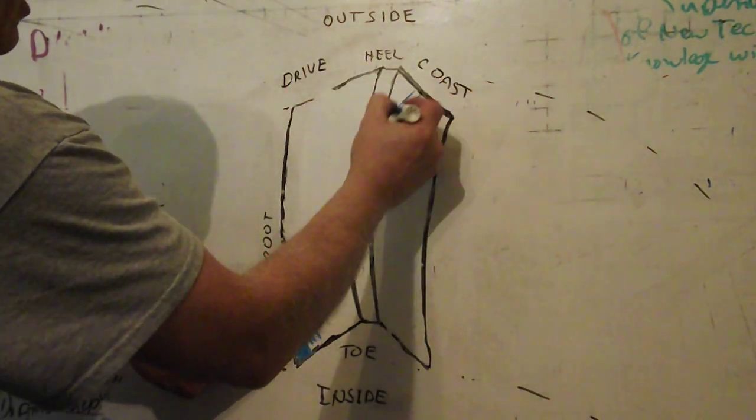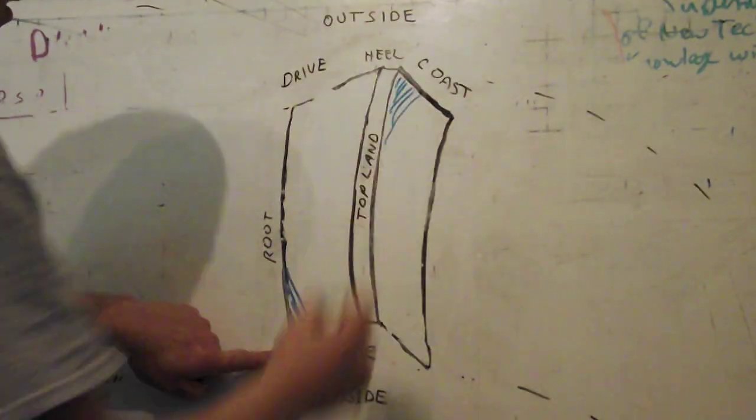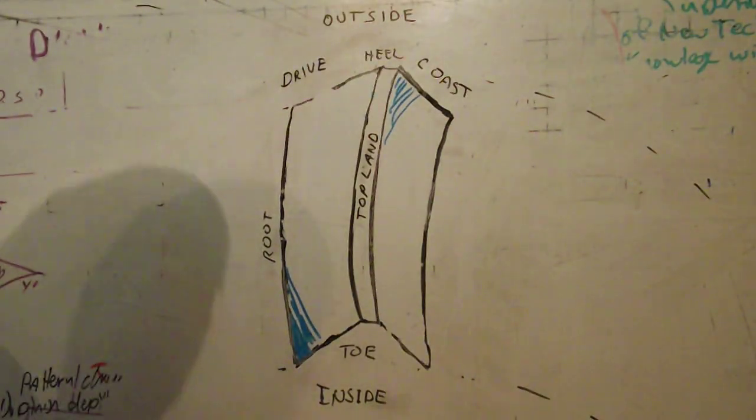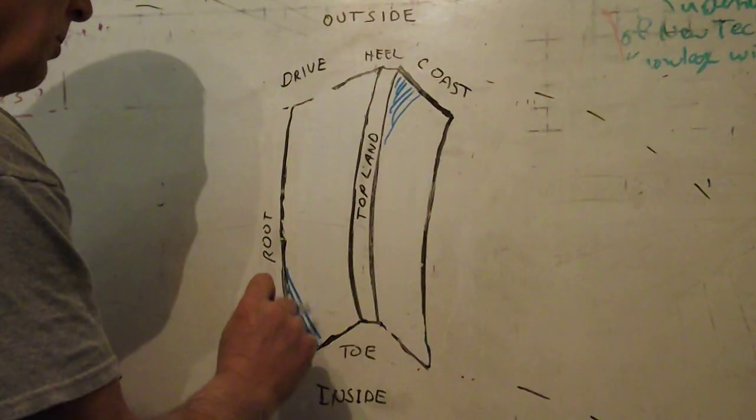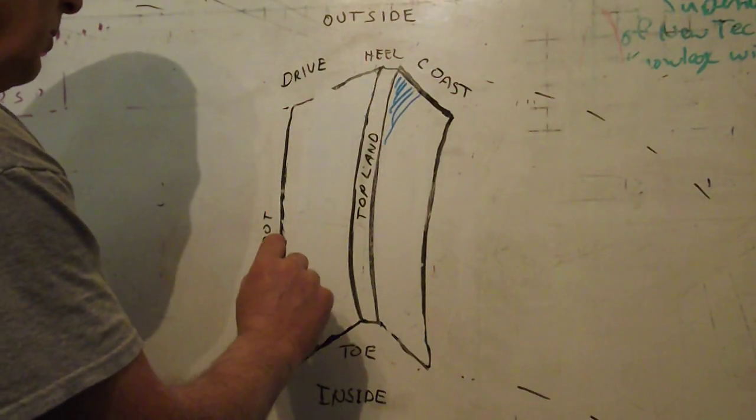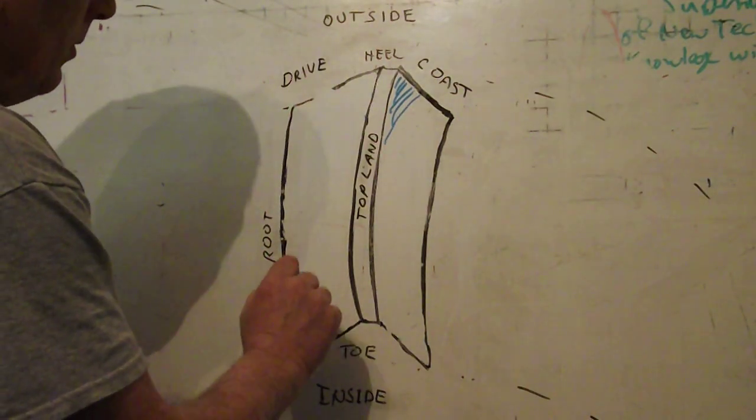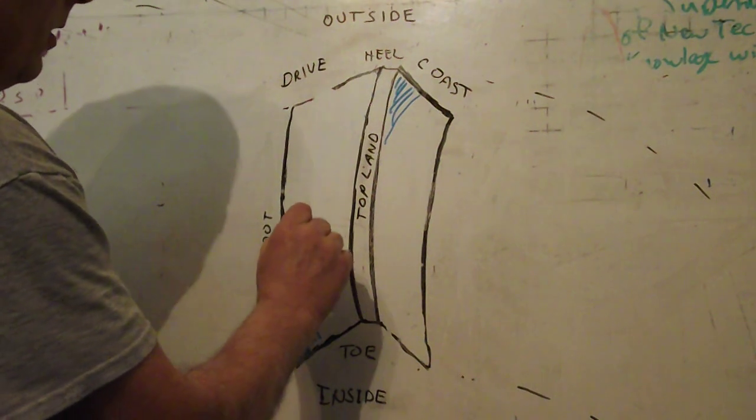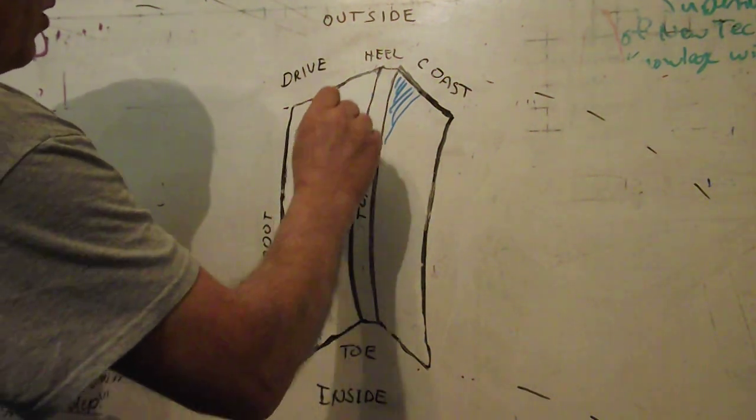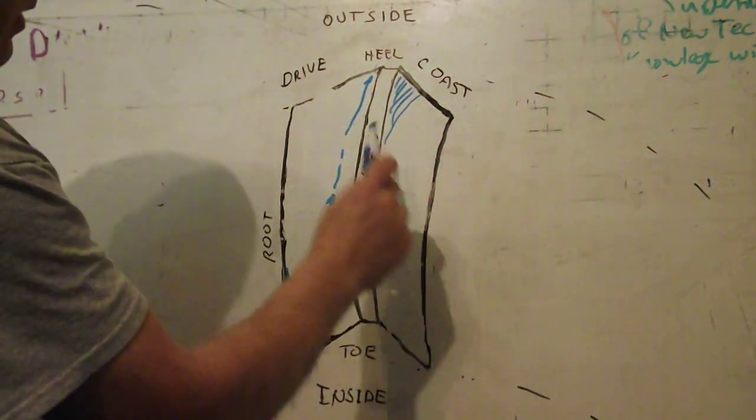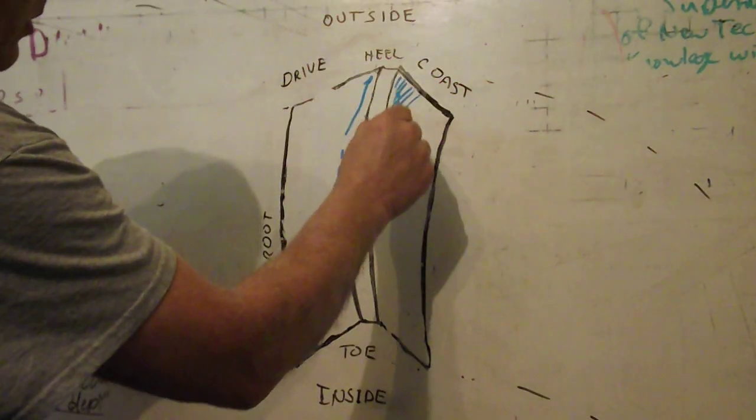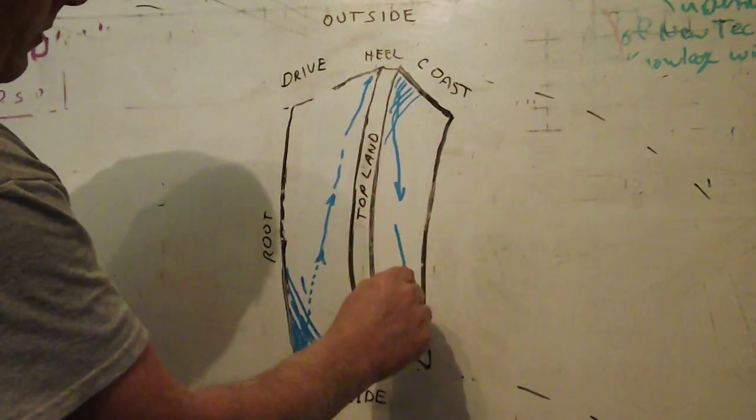As you pull that pinion out to the more correct depth, that pattern will move along. It kind of moves on a line going to the opposite corner, and you'll see this pattern do the same thing, heading for this corner.